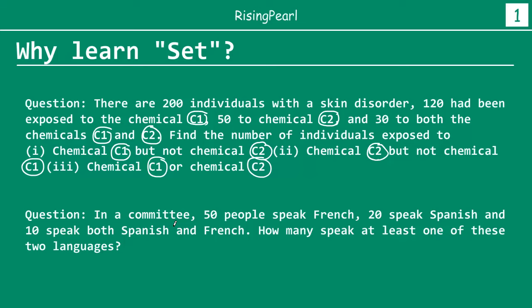The last example is: in a committee or group, 50 people speak French and 20 people speak Spanish, and 10 people speak both Spanish and French. How many people speak at least one of these two languages? Now that we understand what kinds of questions we are going to be able to answer once we learn about sets and set theory, let's quickly take a look at what we are going to learn in this series.